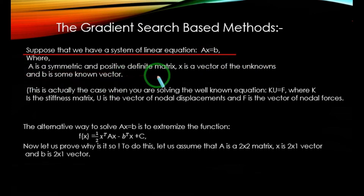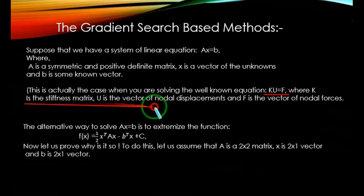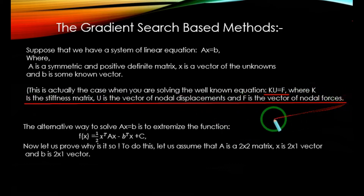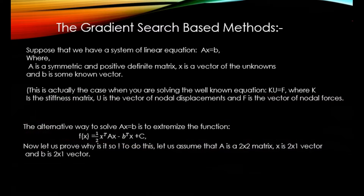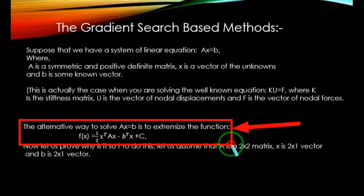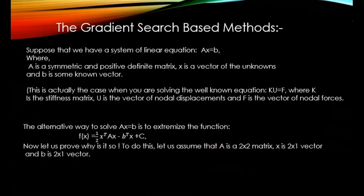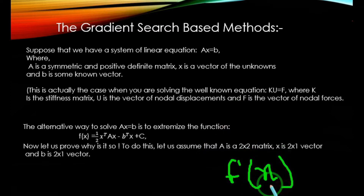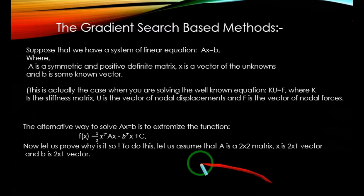This is actually the case when you are solving the well-known equation K·u = f, where K is the stiffness matrix, u is the vector of nodal displacements, and f is the vector of nodal forces — that is basically the stiffness equation. Solving the linear equation Ax = b is equivalent to finding the minimum of the quadratic form f(x) = (1/2)·x^T·A·x − b^T·x + c. Its gradient is given by f'(x) = Ax − b, and finding the minimum of f(x) is the key to solving the system of linear equations Ax = b.